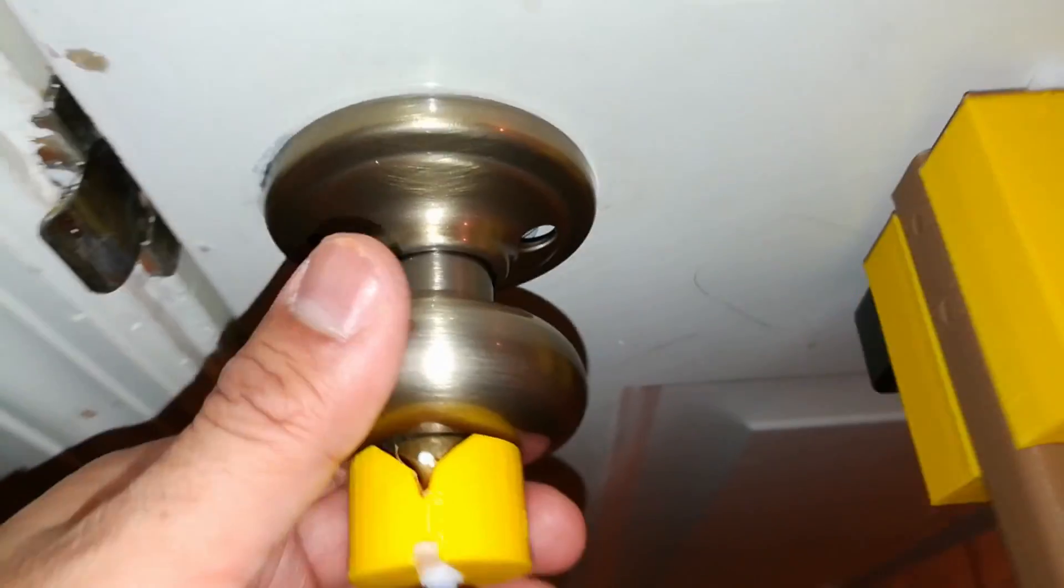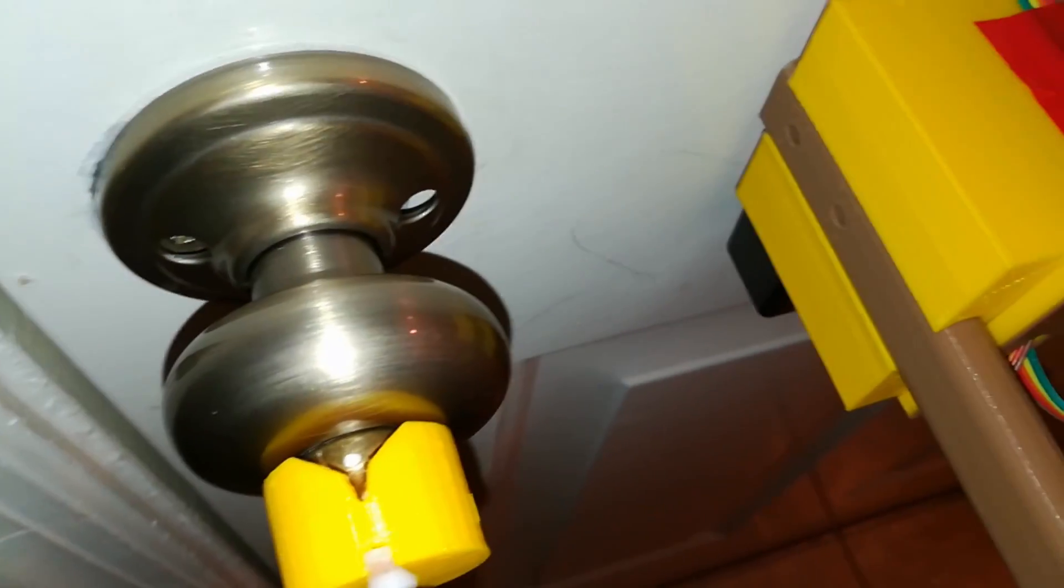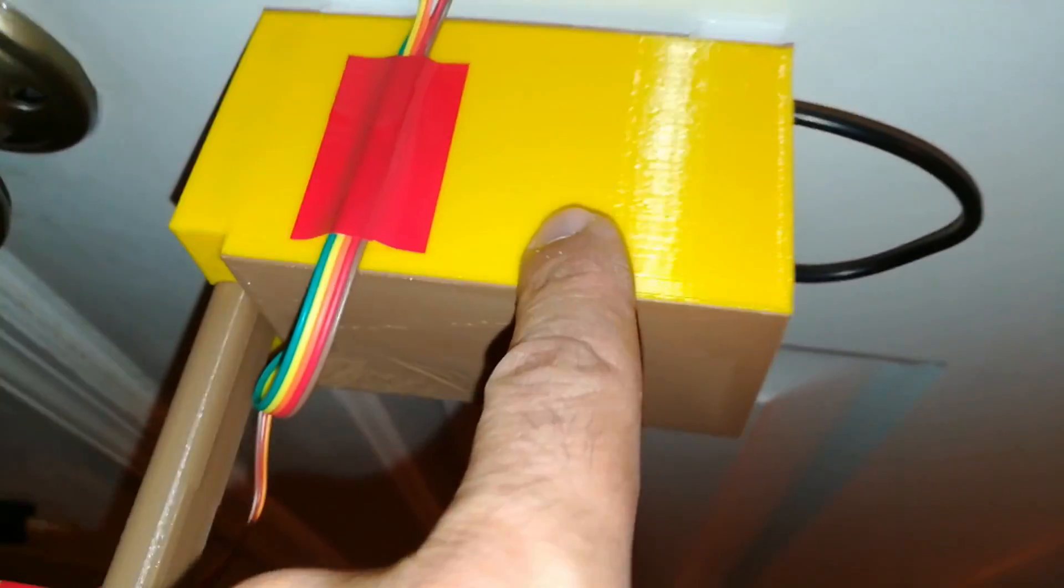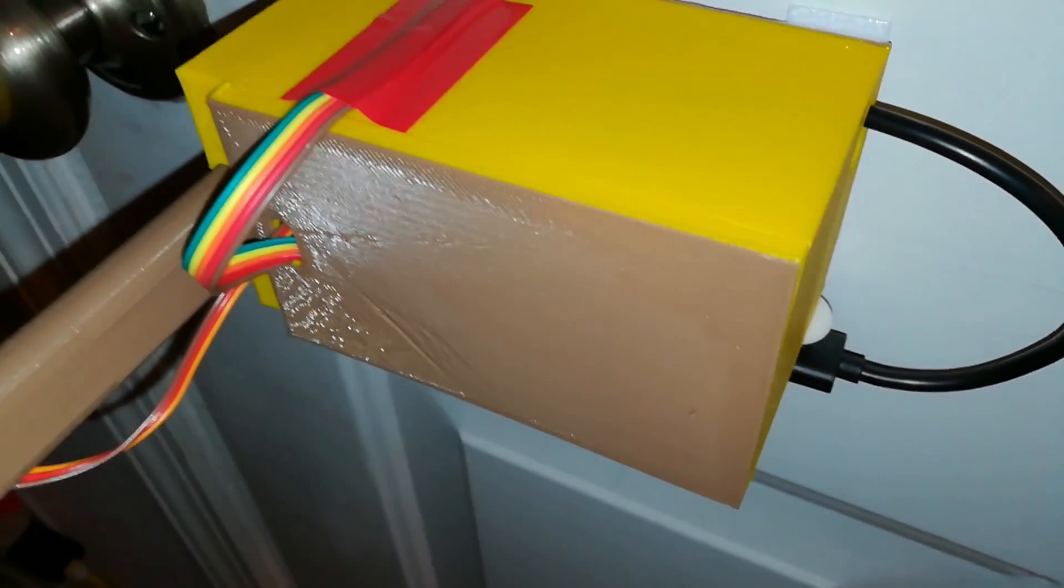This is my smart automatic door lock system. It is designed to be used with most of the door locks available in the US. It has a servo here that actually automates the locking and unlocking of the door. That servo is connected to the Arduino Nano, which is inside this box. That's the microcontroller that controls this whole system.